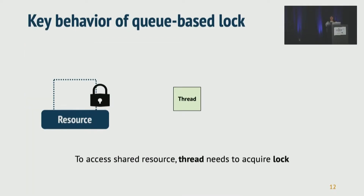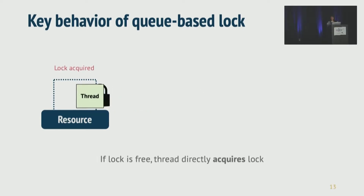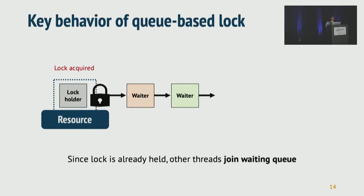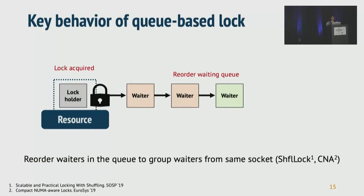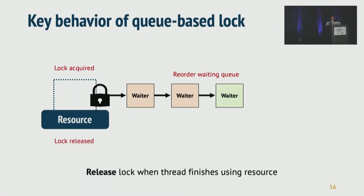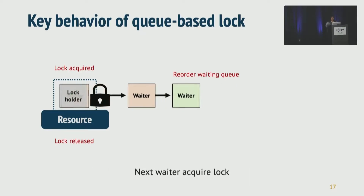Most current lock designs follow queue-based ideology, so let's see how they work. To access shared resources, a thread first needs to acquire a lock. If the lock is free and no one else is using it, the thread directly acquires the lock. After that, more threads try to use the lock. Since the lock is already held, other threads join the waiting queue. While waiting, threads can reorder themselves in the queue. For example, ShuffleLock and CNA have a mechanism to reorder waiters and group threads from the same socket. When a thread finishes using the resource, it releases the lock and leaves the critical section. Then the next waiter acquires the lock and becomes the lock holder. This is how queue-based locks work.